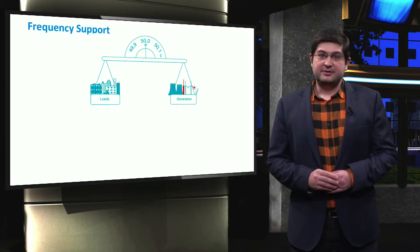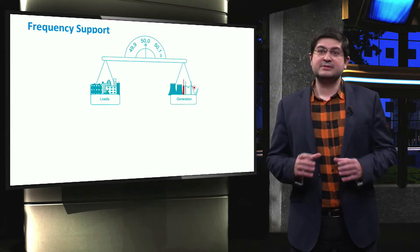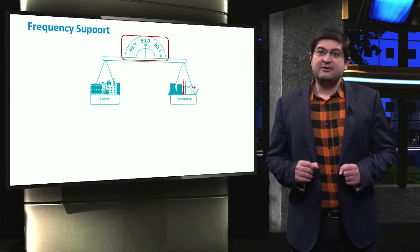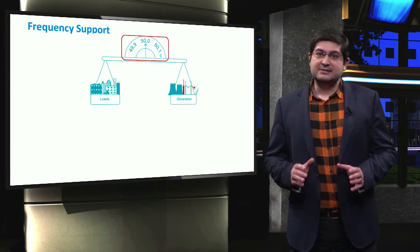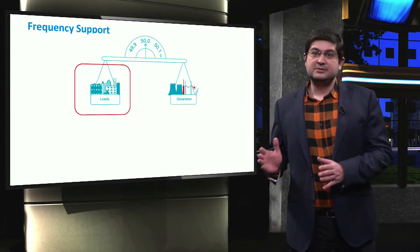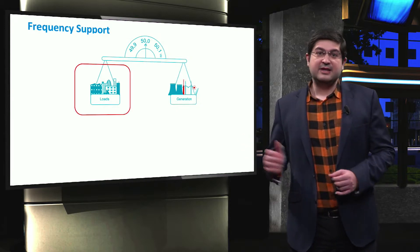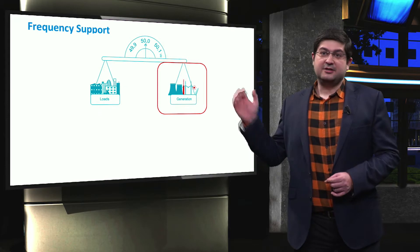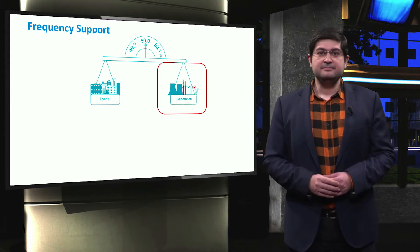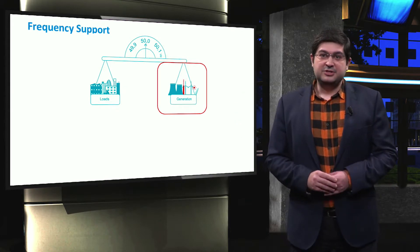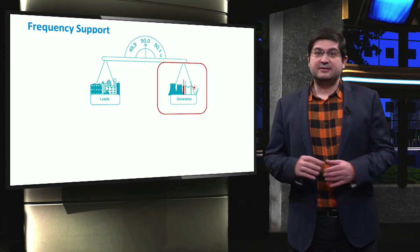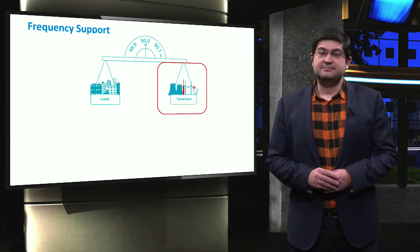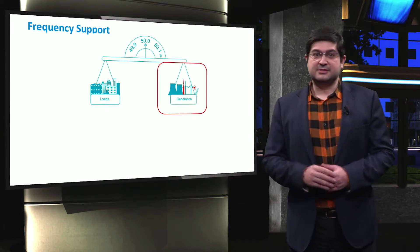As shown in the figure, the frequency remains stable at 50 Hz when there is a balance between the loads on the left-hand side and the generation on the right-hand side. If the total power generation is higher than the loads, then the frequency starts to increase, and vice versa.